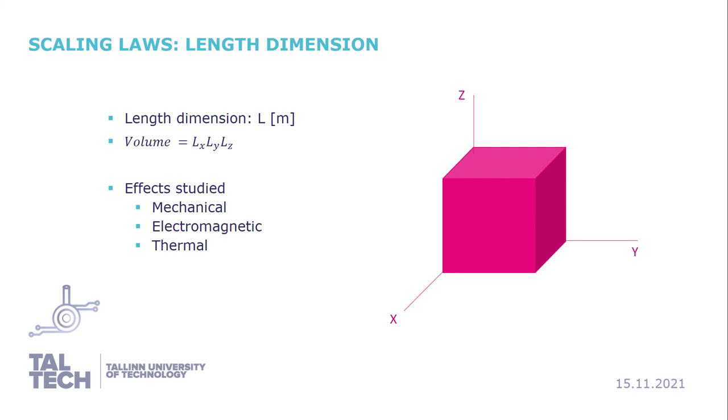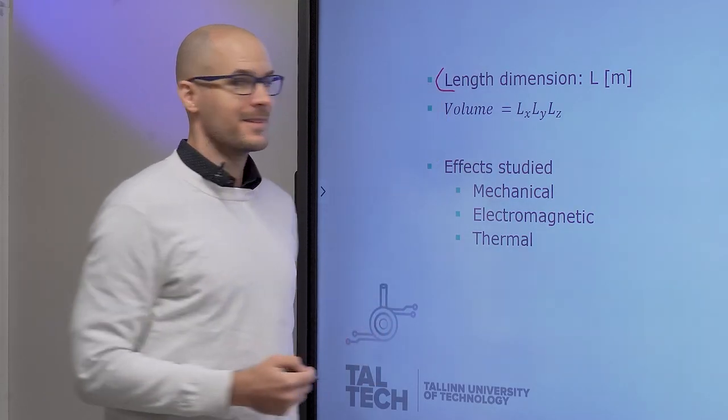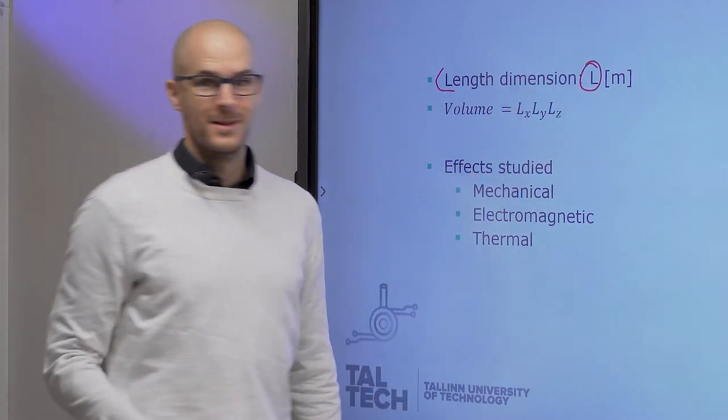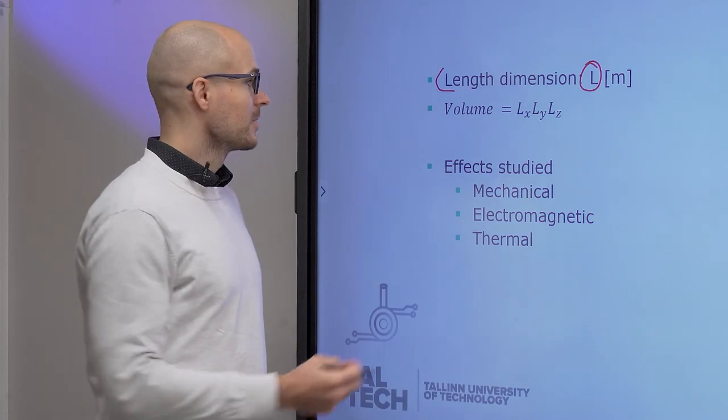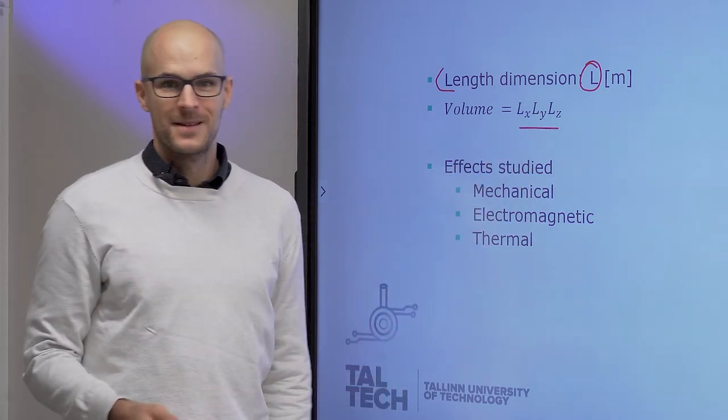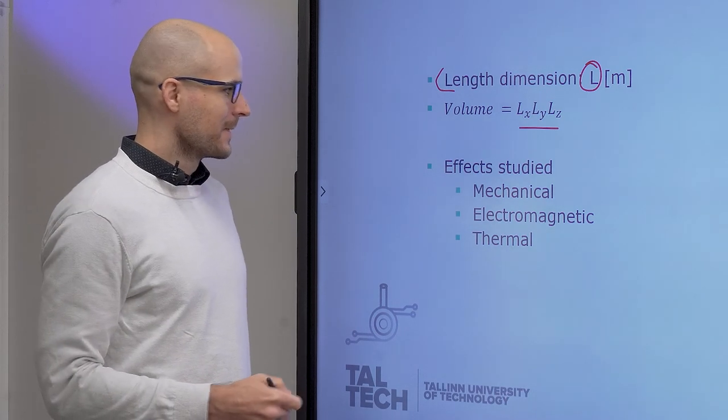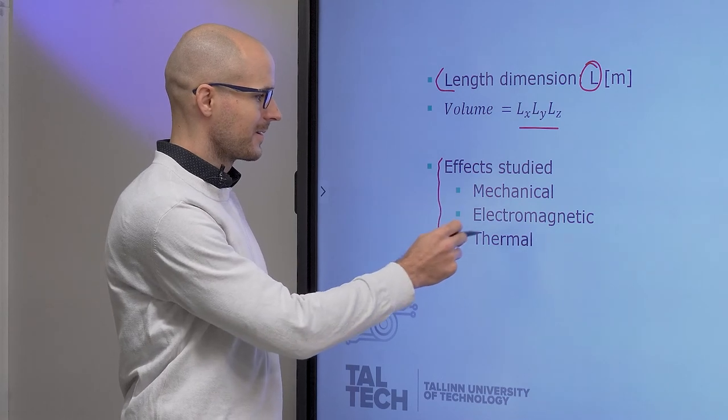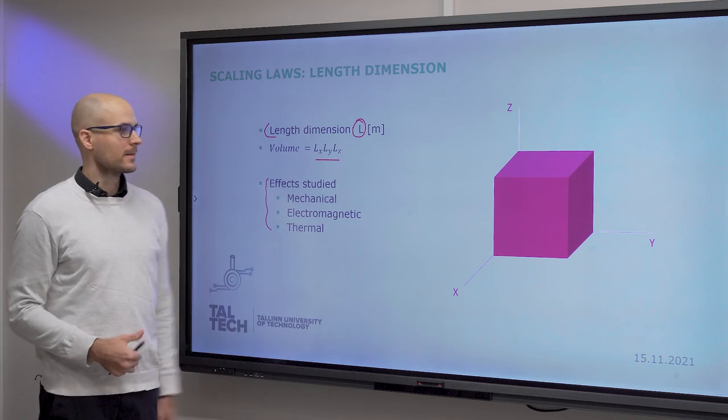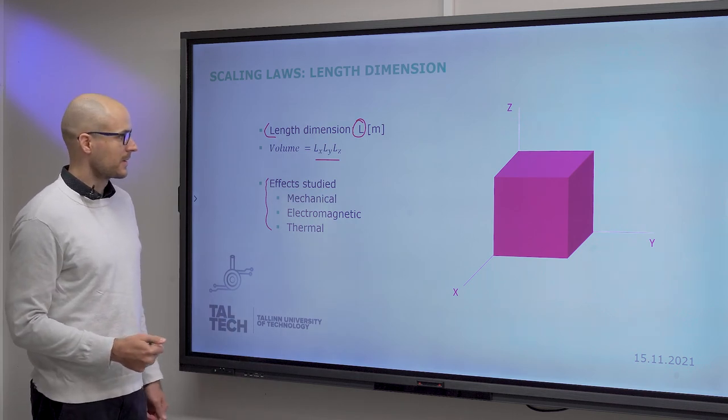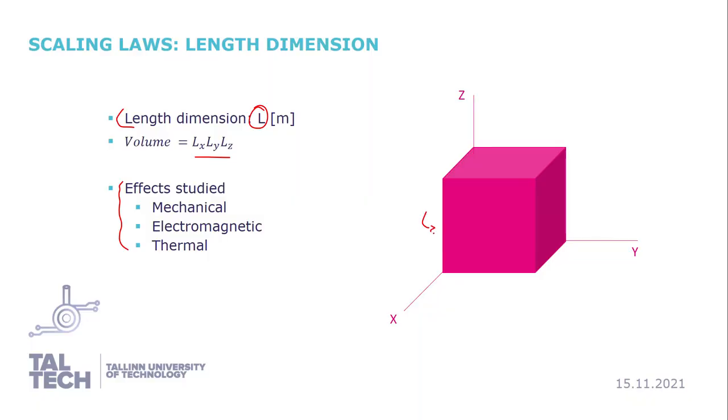Now, to start talking about scaling laws, first we need to talk about the scale that we will use. We use Cartesian coordinates, three-dimensional Cartesian coordinates, or coordinate system. Length dimension is given in characteristic length, in meters, mostly micrometers. But anyway, then volume would be all the three lengths multiplied. And then the effects we study are mechanical, electromagnetic, and thermal. On the right you just see a characteristic representation. So this would be LZ, LY, and LX.